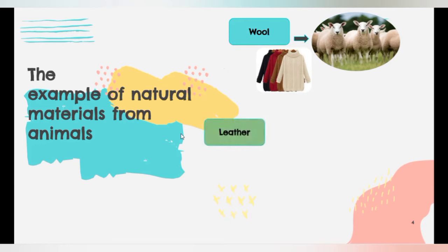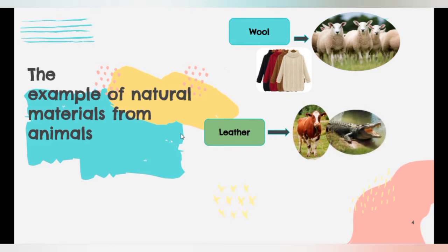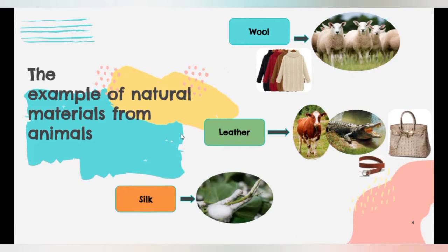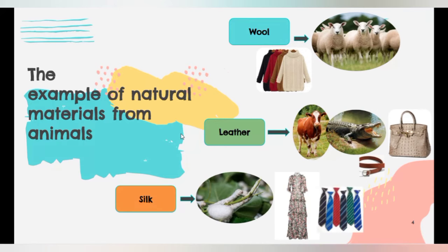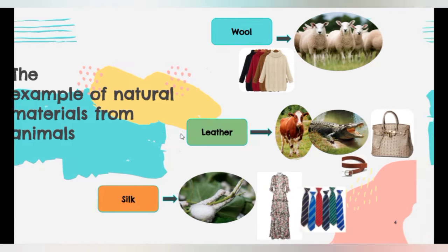Second, leather. We can get leather from cow and crocodile. It can be used to make bag and belt. Third, silk. We can get silk from silk worms. It can be used to make silk dress and silk tie.